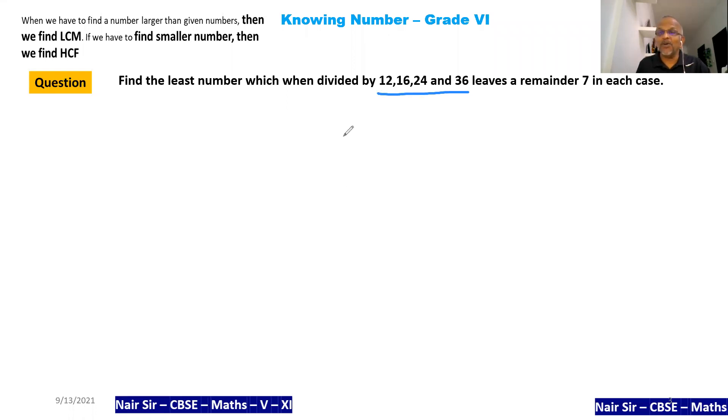LCM of 12, 16, 24, 36. What is the rule? Look at all the unit places. All the unit places are even, so this will be divided by 2. 2 times 6 is 12, 2 times 8 is 16, 2 times 12 is 24, 2 times 18 is 36.